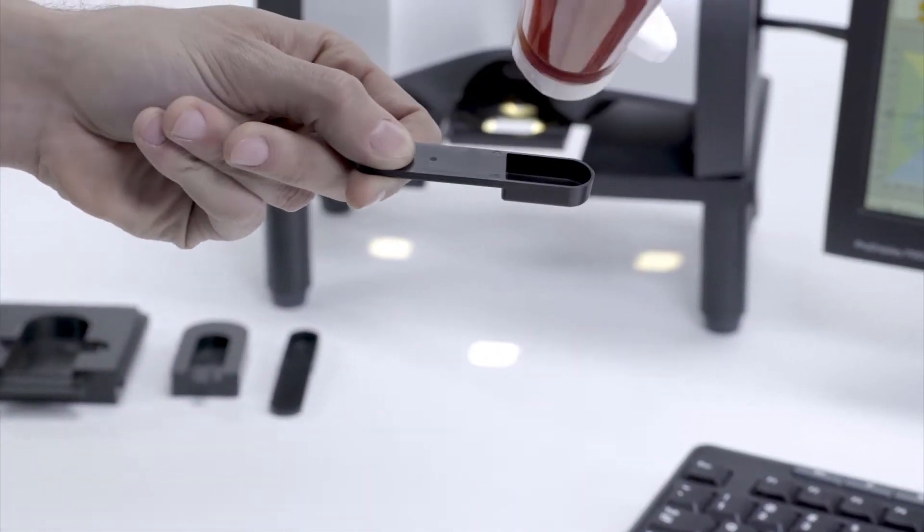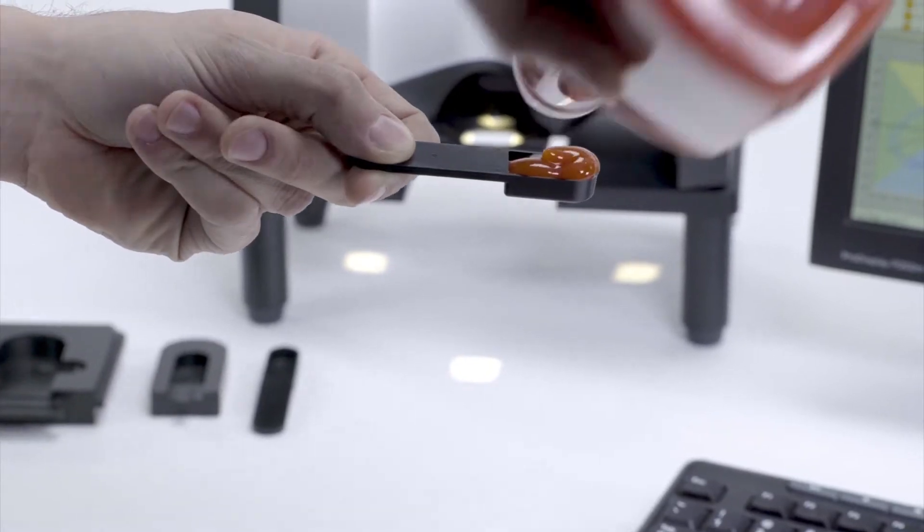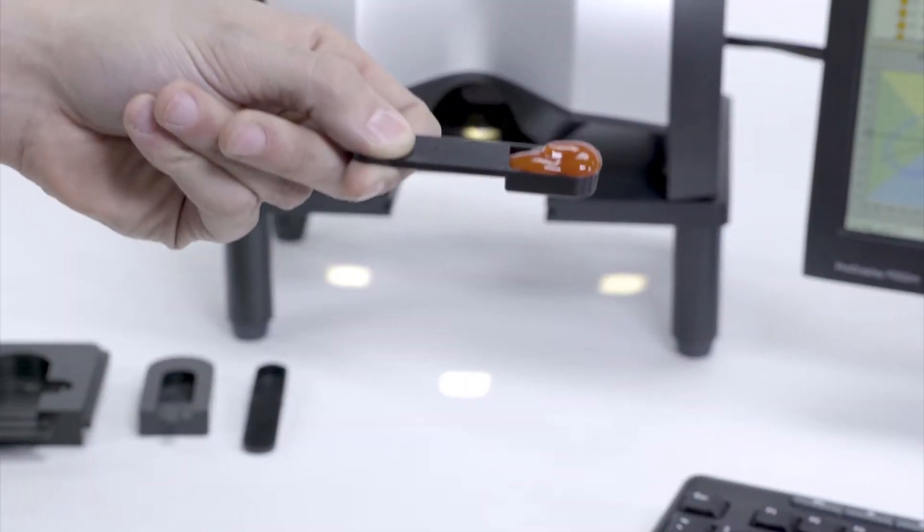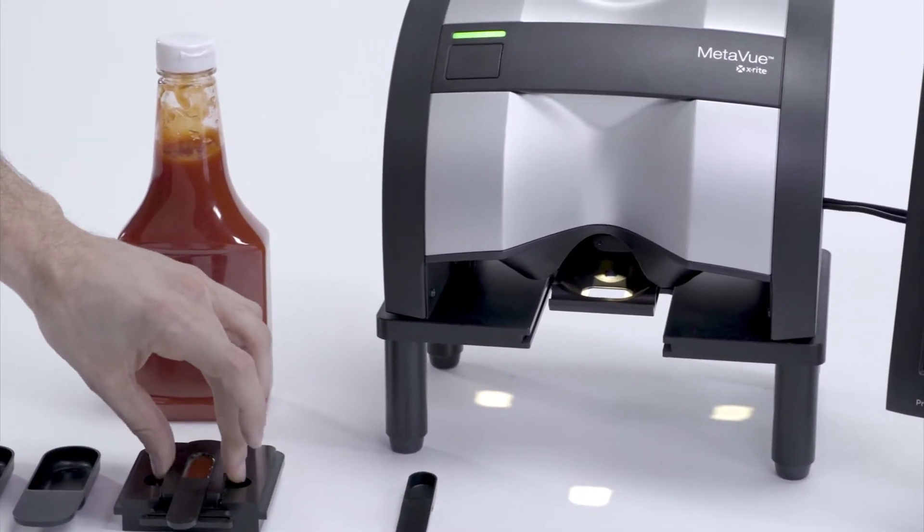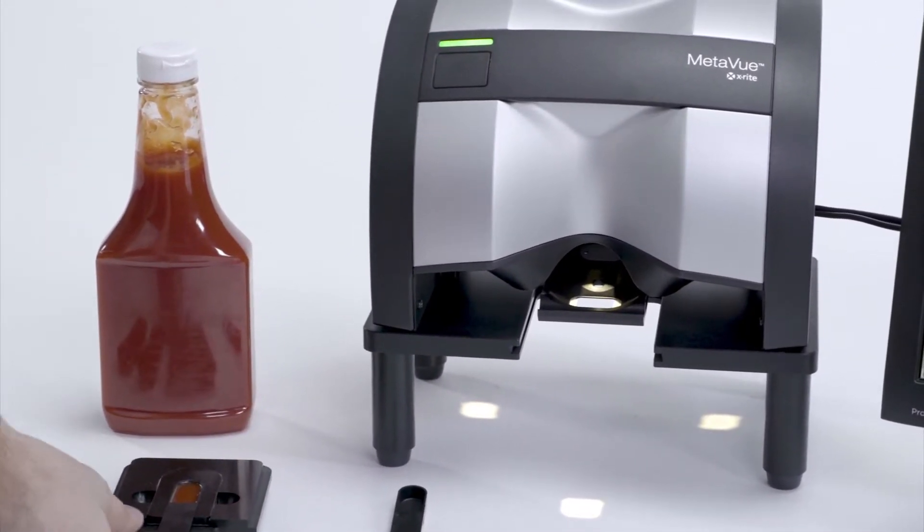Similarly, liquids, pastes, and gels can be put into a spoon, leveled if necessary, and the spoon placed into the sample holder. The material is now correctly presented for measurement.